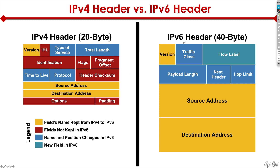If you look at the IPv6 header to the right, in contrast, it's double in length — it's 40 bytes — but it's a lot more simplified. It's only eight fields as opposed to 14 fields, so it's been really optimized.